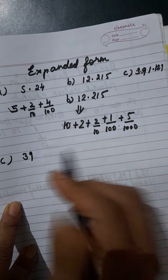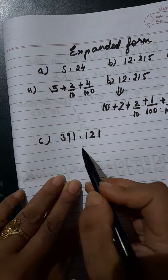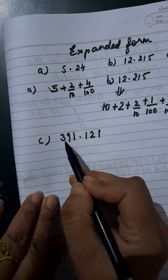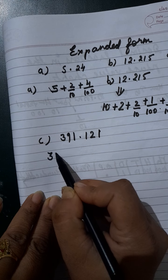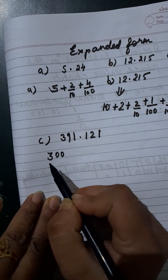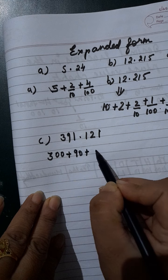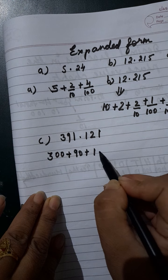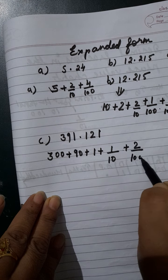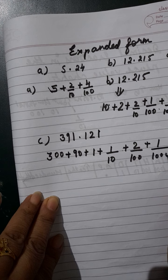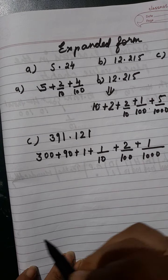The next example is 391.121. We explain this number as: the place value of 3 is 300, this is 90, so 300 plus 90 plus 1 plus 1/10 plus 2/100 plus 1/1000. In expanded form we can write the numbers like that.